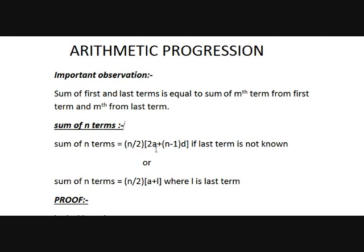This is the important observation — you should remember this, as there are many uses of this in the future. Now, the sum of n terms: what is the sum of n terms in arithmetic progression? Sum of n terms is equal to n by 2 into 2a plus n minus 1 times d, if the last term is not known. The general formula is sum of n terms equals n by 2 into a plus l, where l is the last term. The last term is in the form a plus n minus 1 times d.